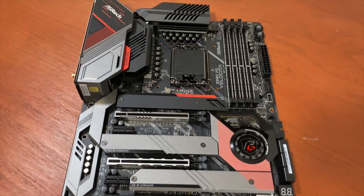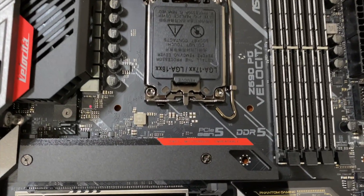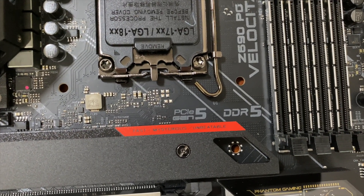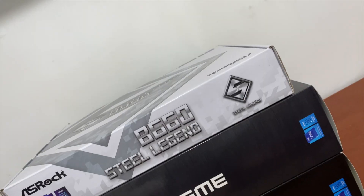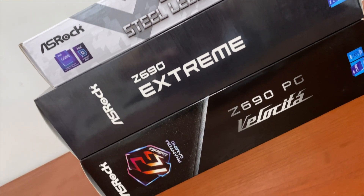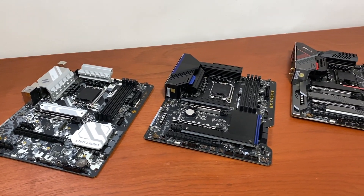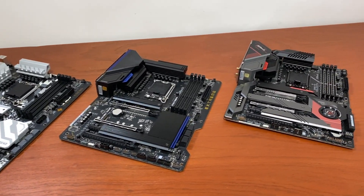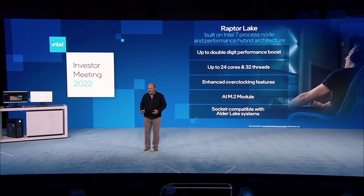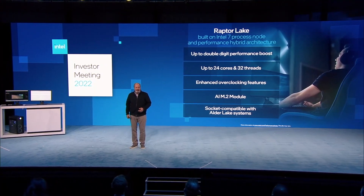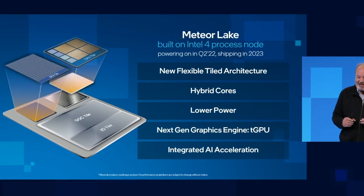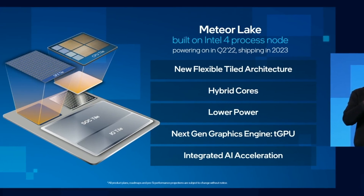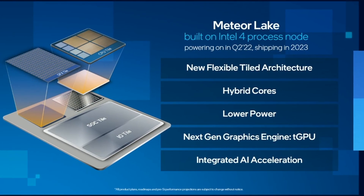Other than that, 13th gen processors will share a lot of features with the current 12th gen, such as PCIe 5.0, the same integrated graphics, and the LGA 1700 socket. This means that if you already own a 600 series motherboard, you will be able to upgrade to a 13th gen CPU without buying a new one. The new processor will be manufactured using the existing Intel 7 fabrication node, same as 12th gen. The better Intel 4 node is expected to debut next year with the release of 14th gen Meteor Lake processors, which will heavily focus on mobile, but desktop options are expected to launch as well.